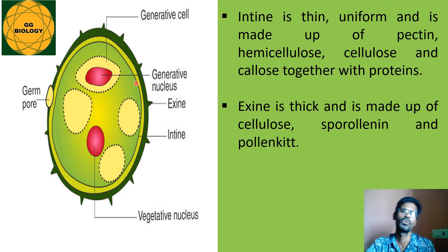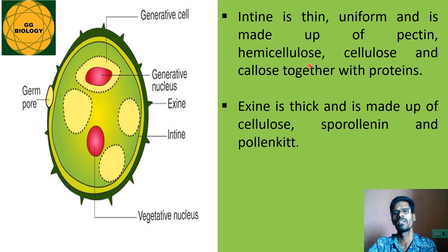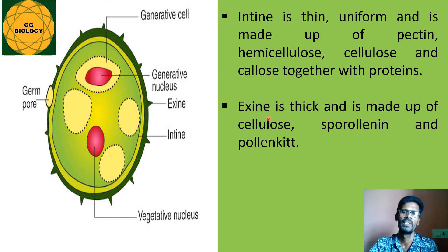The intine is usually very thin and uniform in structure. It is made up of chemicals like pectin, hemicellulose, cellulose, and callose, together with certain proteins.